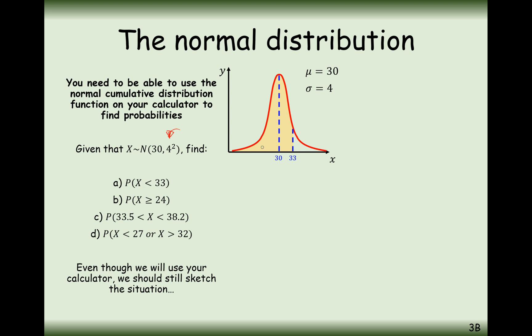What we need to do then is first of all draw a good graph, because that will give you an idea as to whether your probability is going to be more than 0.5 or less than 0.5. In this case here, we have a mean of 30 and we want to work out the probability of less than 33. With the normal distribution, it's the area under the curve that gives us the probability.